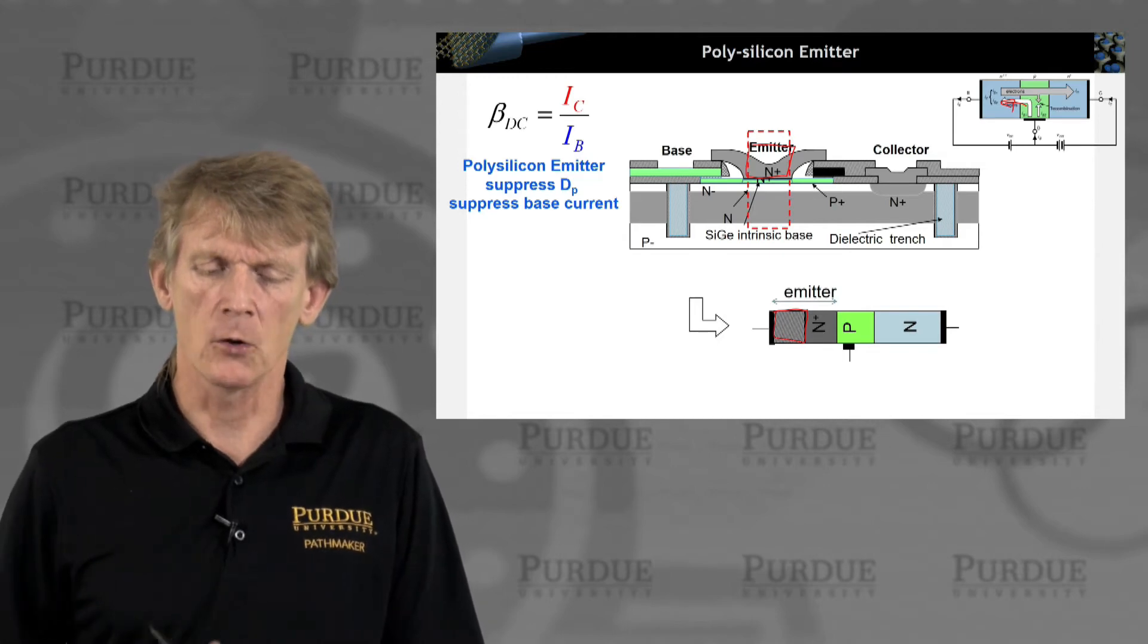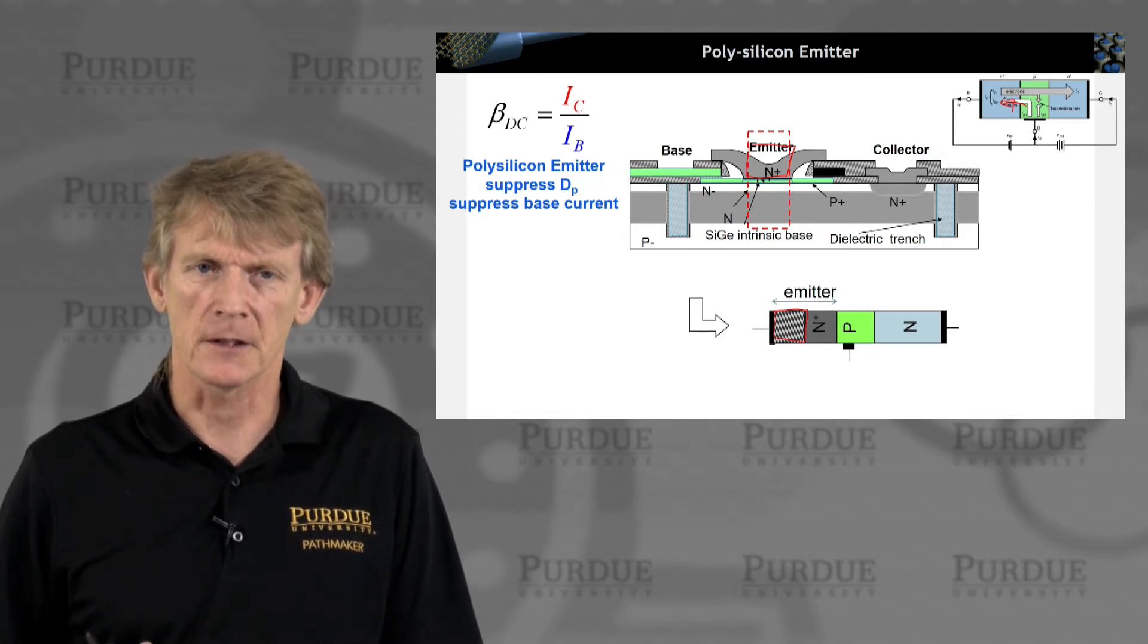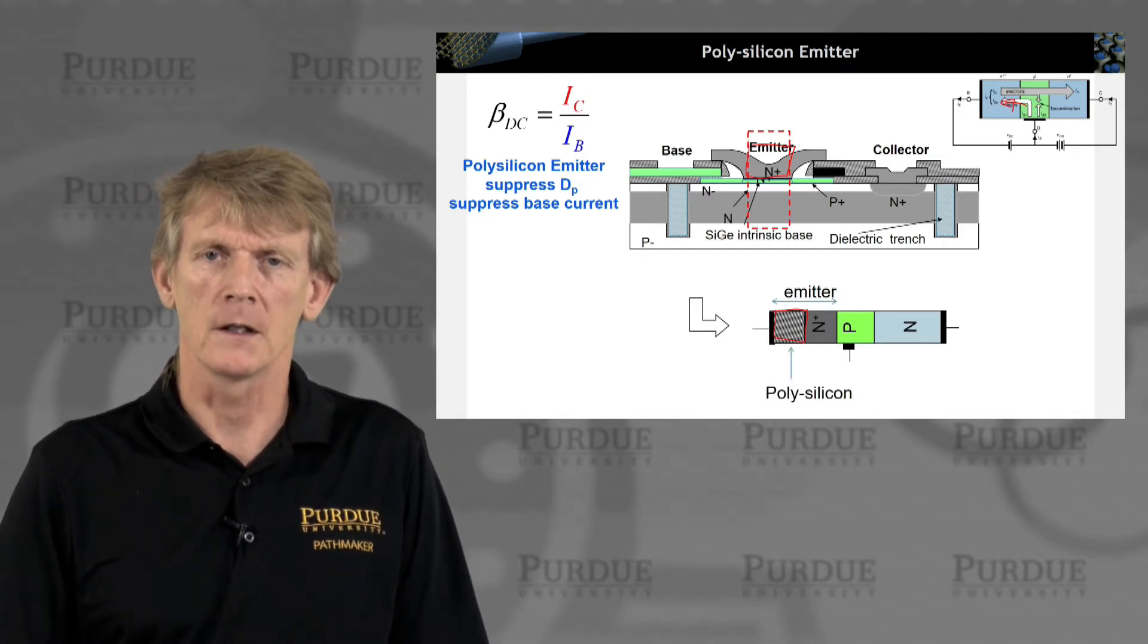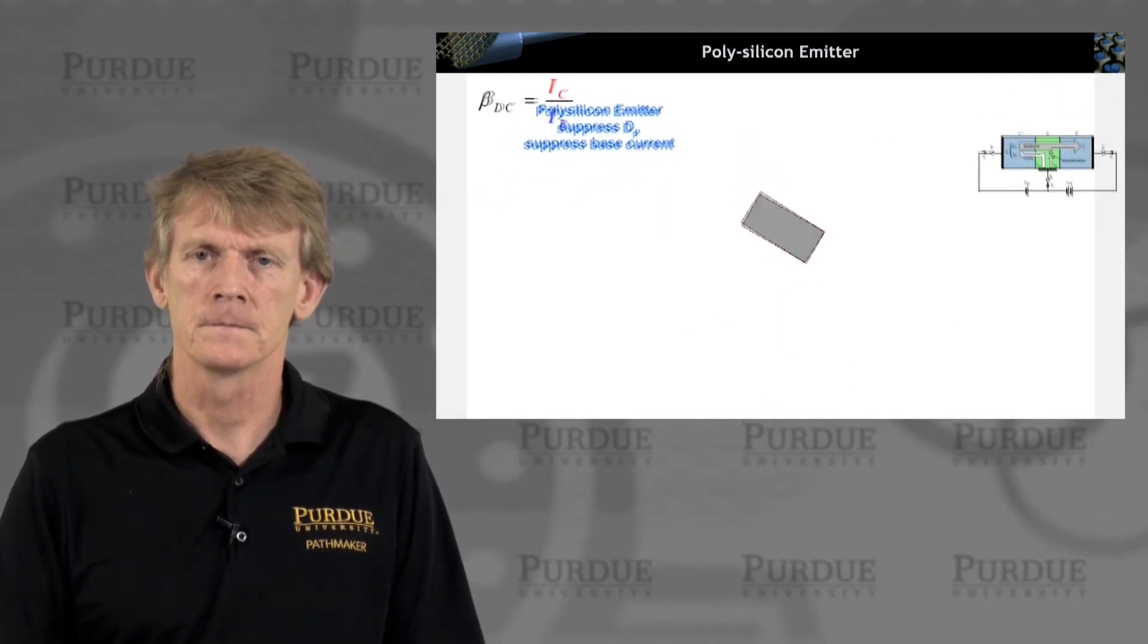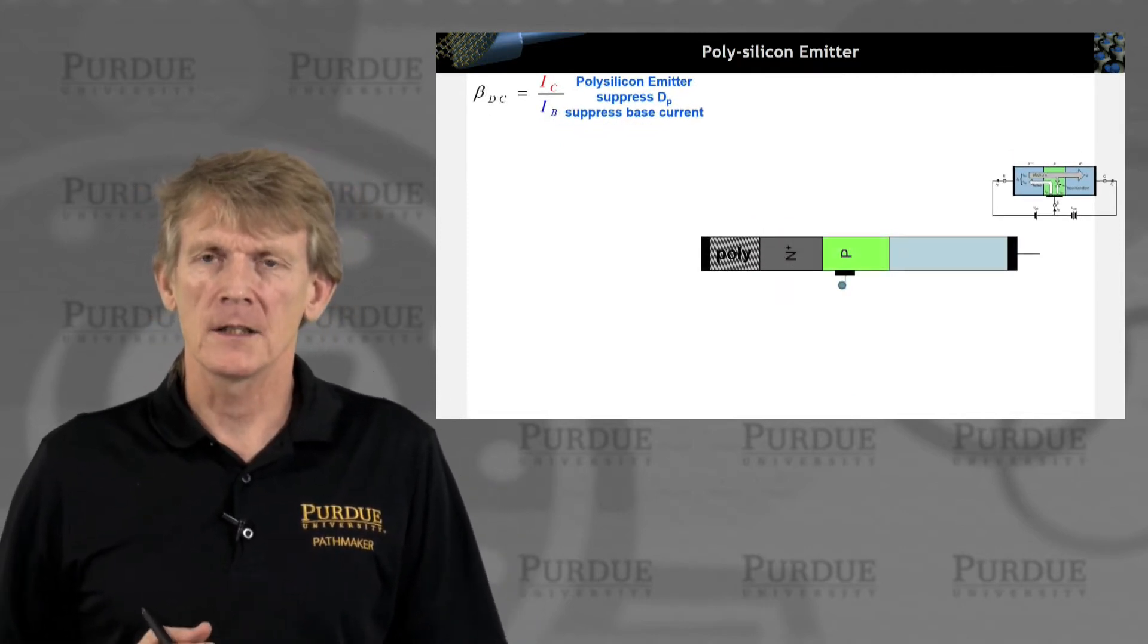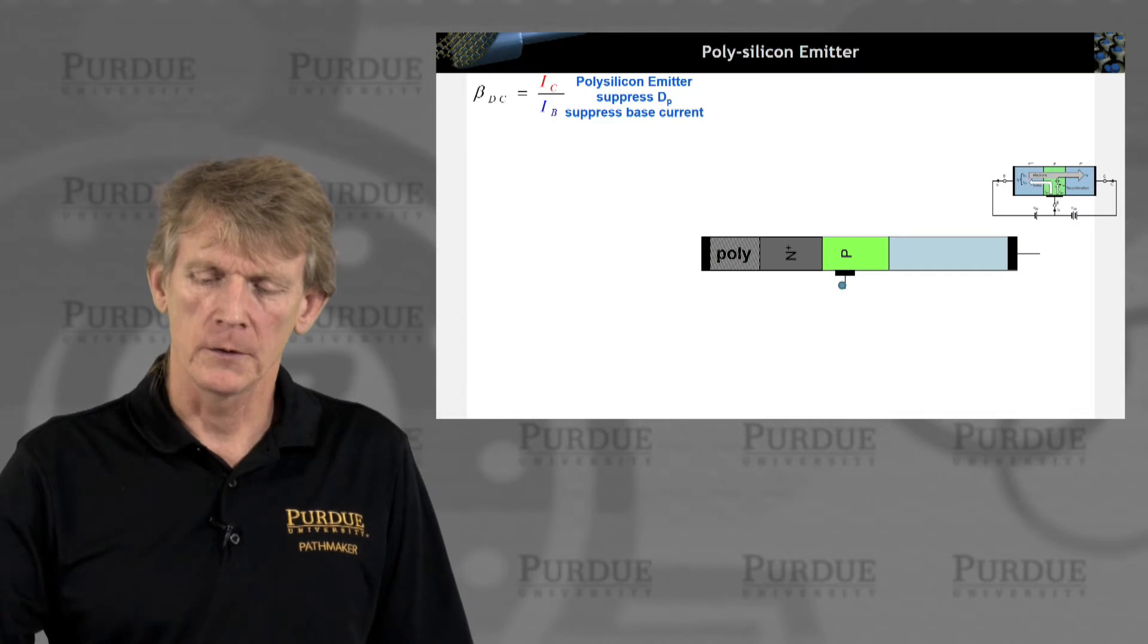It behaves differently than pure silicon. It is still a good conductor, but it's not as good of a conductor as silicon. And we'll see some effects on that here in the design of this emitter. So the overall emitter is now a heterostructure, if you will, of polysilicon and high-quality silicon. We're after understanding this hole flow here.